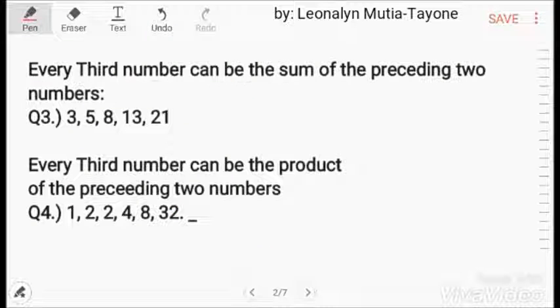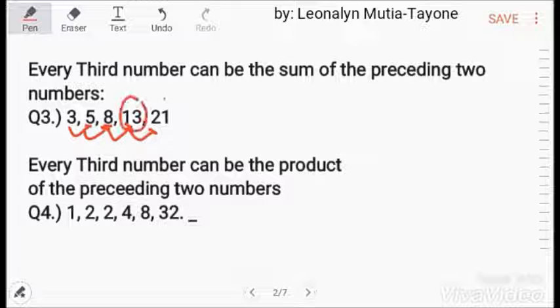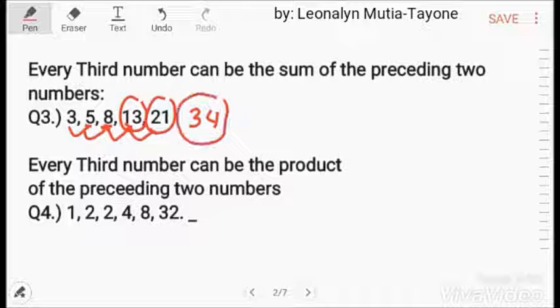Every third number can be the sum of the preceding two numbers. So, 3 plus 5 equals 8. 5 plus 8 equals 13. 8 plus 13 equals 21. So, 13 plus 21 equals 34. The answer here is 34.